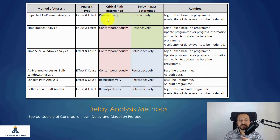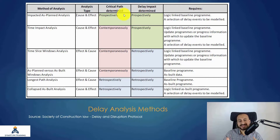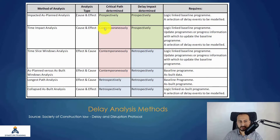There are prospective methods — on a given data date, whether a baseline or a schedule update, you are forecasting the impact of an event before the delay has actually happened. You forecast how it will look based on assumptions or a series of activities. For Time Impact Analysis, we use contemporary records — the schedule updates — which is what makes TIA stronger than other methods.